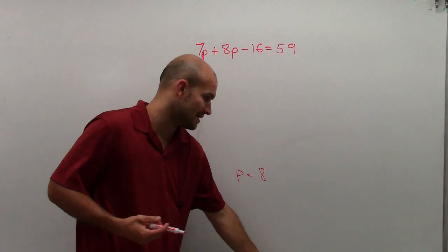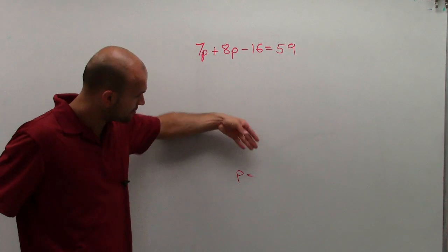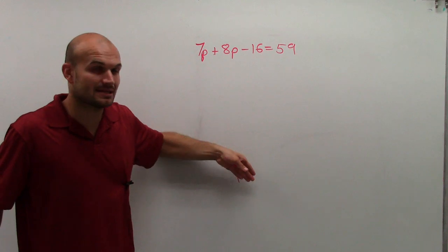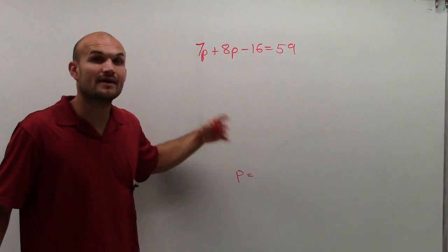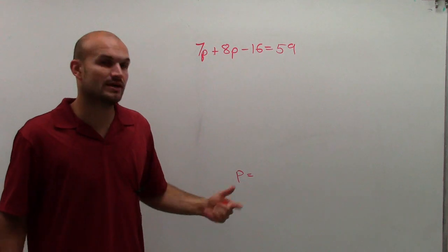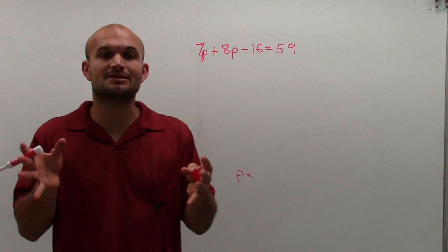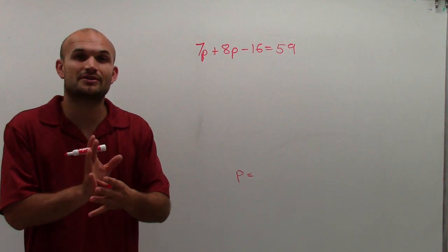The main important thing is we need to get this variable by itself. Also, we need to get one variable. Right here, we have two variables. So how can we take these two variables and bring them together to get one?